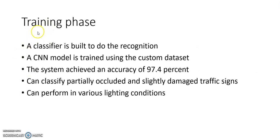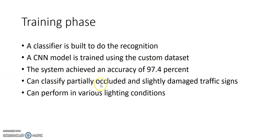The system is divided into two phases. The first phase is the training phase, where the classifier will be built to perform the recognition. The classifier is a CNN model — CNN means Convolutional Neural Network, which is a family of deep learning. The model will be trained using the custom dataset, and after training, the system achieved an accuracy of 97.4%, which is quite accurate. It can also classify partially occluded images and slightly damaged traffic signs, and can perform in various lighting conditions.